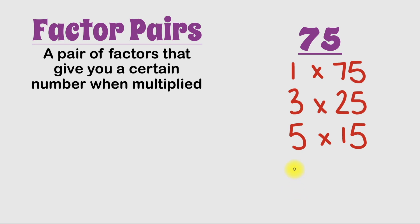6 can't go into 75, 7 can't. Neither can 8 or 9 or 10 or 11 or 12 or 13 or 14. But 15 can. And since we already have the number 15 in our list of factor pairs, that means we're done.